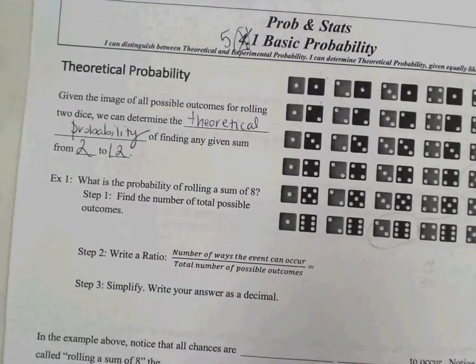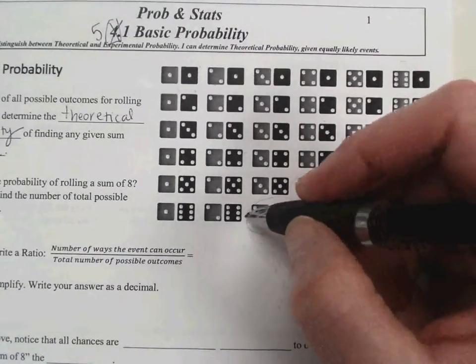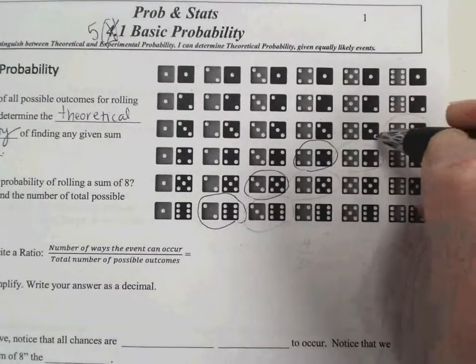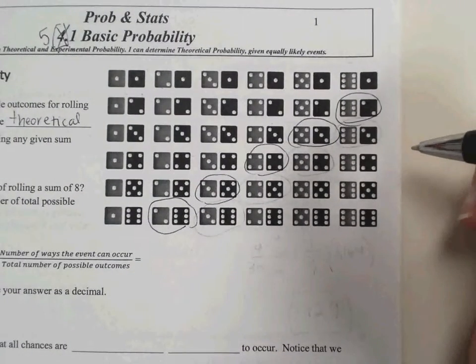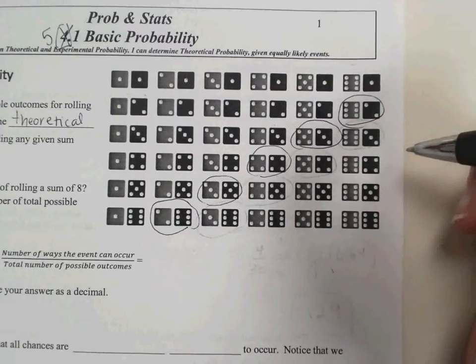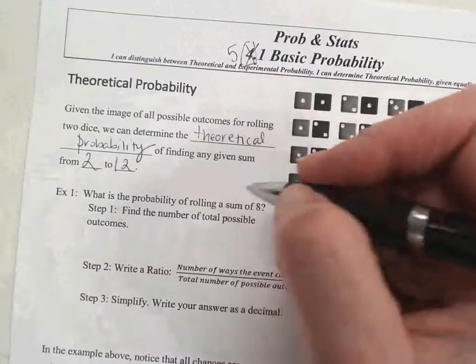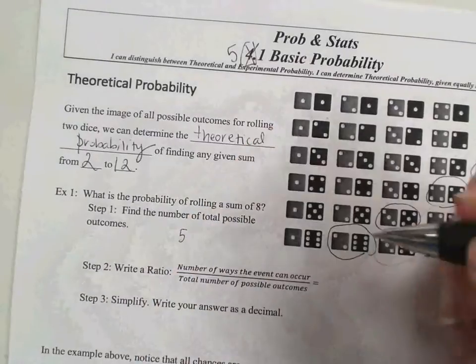What is the probability of rolling a sum of 8? The first thing you would do is find the number of total possible outcomes. So you look over and find out how many ways are there to roll a sum of 8. I see 5. Does anyone see more than 5? So it looks like we have 5 possible ways to get an 8.